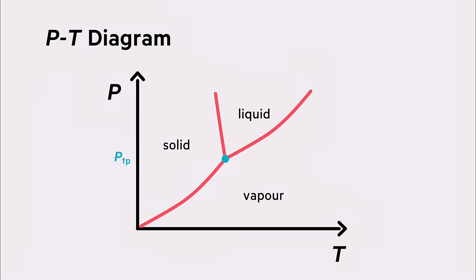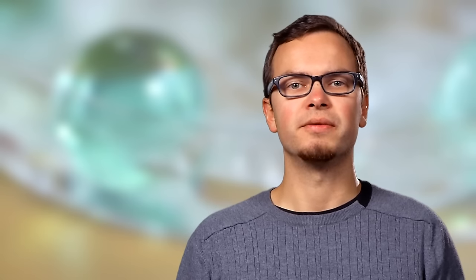At absolute pressure below the triple point a substance cannot exist in its liquid phase. During condensation for example it will go directly from the vapor phase to the solid phase. This process is called deposition.